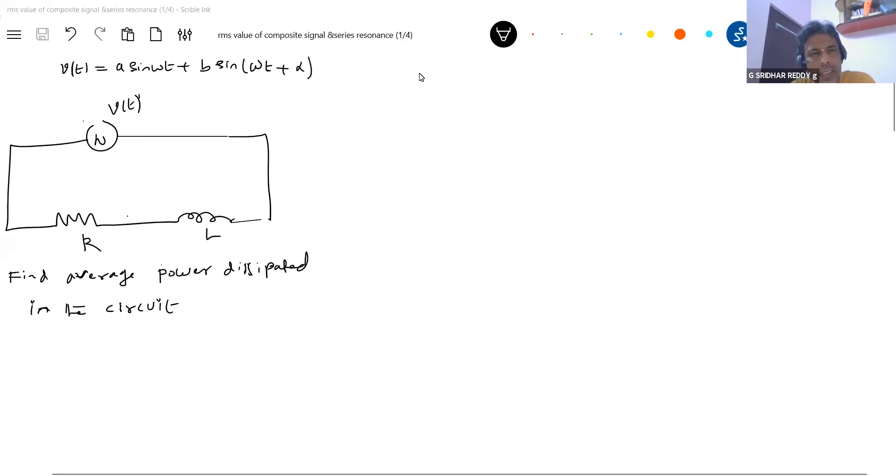B sin omega t plus alpha. Till now we confined ourselves to something with only A sin omega t. What happens if some composite signal comes like this? What method has to be applied?